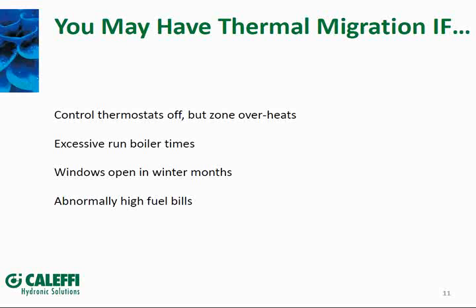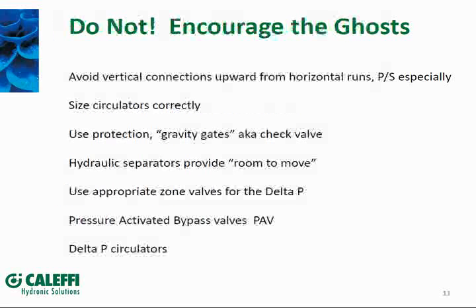Indications of thermal migration or ghost flow in a heating system include: control thermostats turned off but zones still overheating; boilers running in the summertime with no call for heat. You'll see it in big cities in winter — someone has their window propped open because the heat won't shut off. It can also show up in high fuel bills in the summer. If it's a garage floor radiant zone, nobody may notice, yet the boiler is firing and consuming energy unnecessarily.